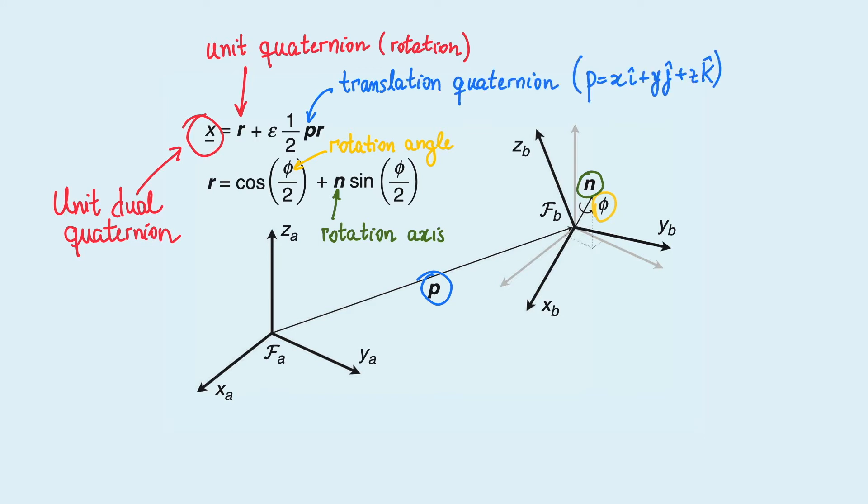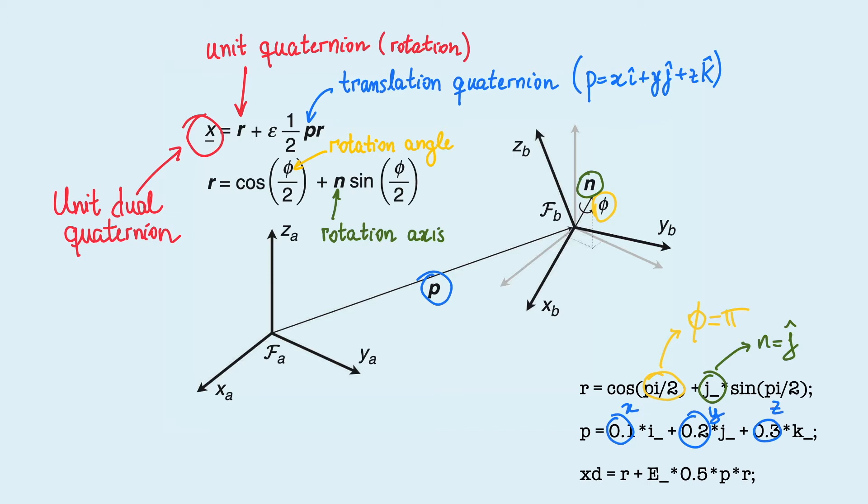We say that this quaternion is pure because the real part equals zero. In Diki Robotics, it is very easy to define unit dual quaternions because they are just objects of class Diki. For instance, we can define a rotation of pi around the y-axis, which is represented by the imaginary unit J. The position with coordinates x equals 0.1, y equals 0.2, and z equals 0.3 is written as this pure quaternion, in which here we can see that i, j, and k represent the axes x, y, and z, respectively.